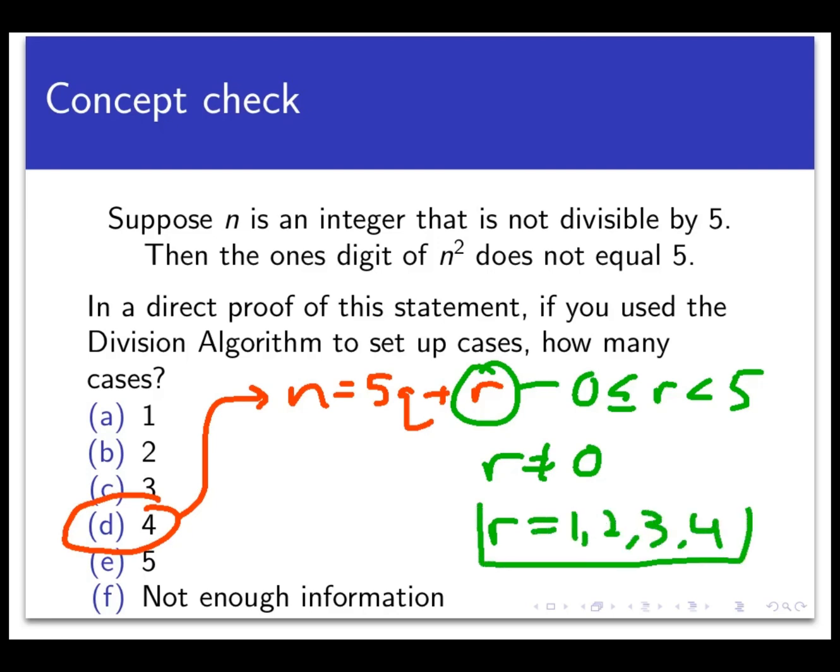A direct proof would proceed from here by exhausting these four cases. Case 1 would assume that n is equal to 5q plus 1 for an integer q and determining something about n². And case 2 would be assuming that n is equal to 5q plus 2 and working with n². Case 3 would assume n is 5q plus 3. And case 4 is assuming that n equals 5q plus 4. So this is kind of a long proof if you wrote it all the way out. But each of the four cases is fairly straightforward. And then at least the work isn't hard, even if there is a lot of it.